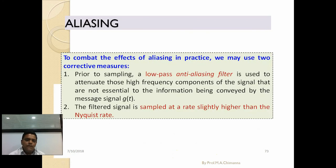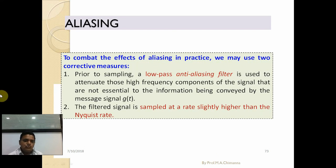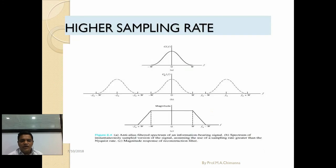To combat the effect of aliasing in practice, we may use two corrective measures. Due to aliasing, an error is generated which affects the performance and efficiency of the digital communication system. Prior to sampling, a low-pass or anti-aliasing filter is used to attenuate those high-frequency components of the signal that are not essential to the information conveyed by the signal g(t). The filtered signal is sampled at a rate slightly higher than the Nyquist rate.